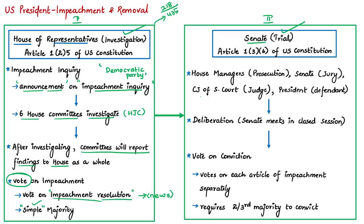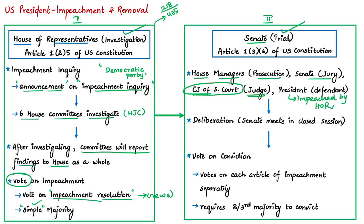The trial for impeachment begins in the Senate to determine whether the president is guilty or not. The House will select managers to present evidence to the Senate, summon witnesses, and the Senate will also issue a writ of summons to the impeached president to appear. The House managers play the role of prosecution, the Senate acts as jury, and the Chief Justice of the Supreme Court of the United States acts as judge, while the impeached official is the defendant.